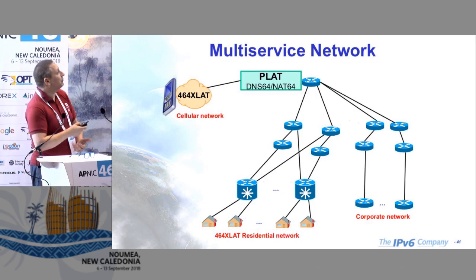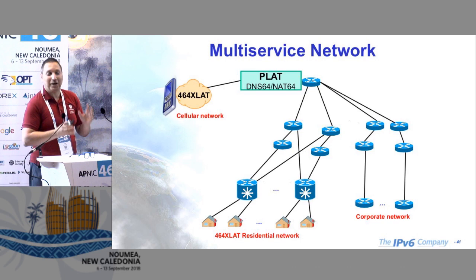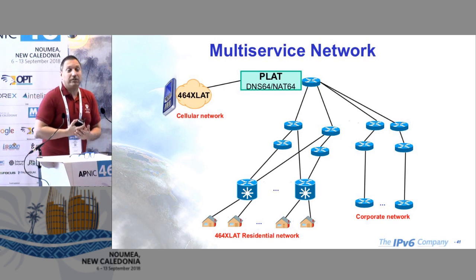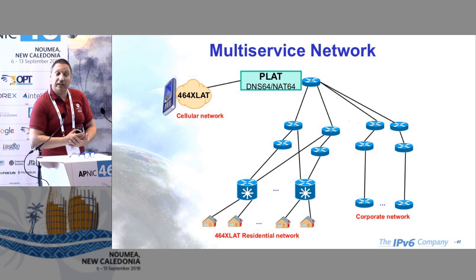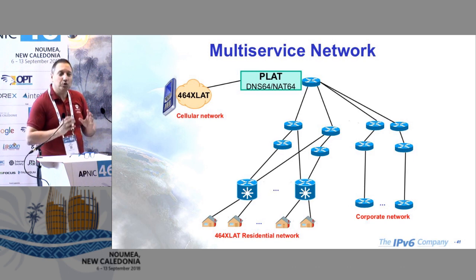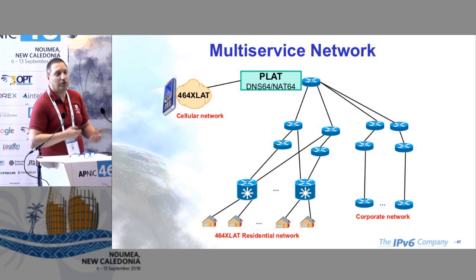Multi-service networks: it makes sense to have a single transition mechanism — 464XLAT — for both your cellular network and your broadband customers. If you have a hybrid router that connects customers via ADSL or GPON and uses an LTE stick as backup, you don't want different transition mechanisms on both sides. I think 464XLAT is already the winner. In terms of server subscribers worldwide, 464XLAT has far more users — hundreds of millions — than all other mechanisms combined.